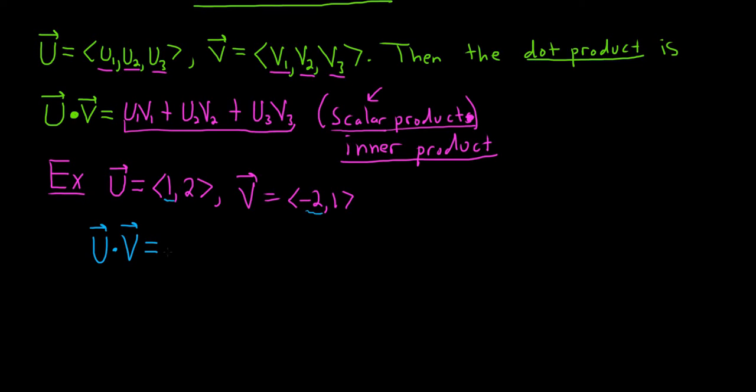So u dot v. As the definition says, we multiply the corresponding components. So 1 times negative 2, and then we add, and then 2 times 1. So negative 2 plus 2 is equal to 0. The dot product of these two vectors is 0.